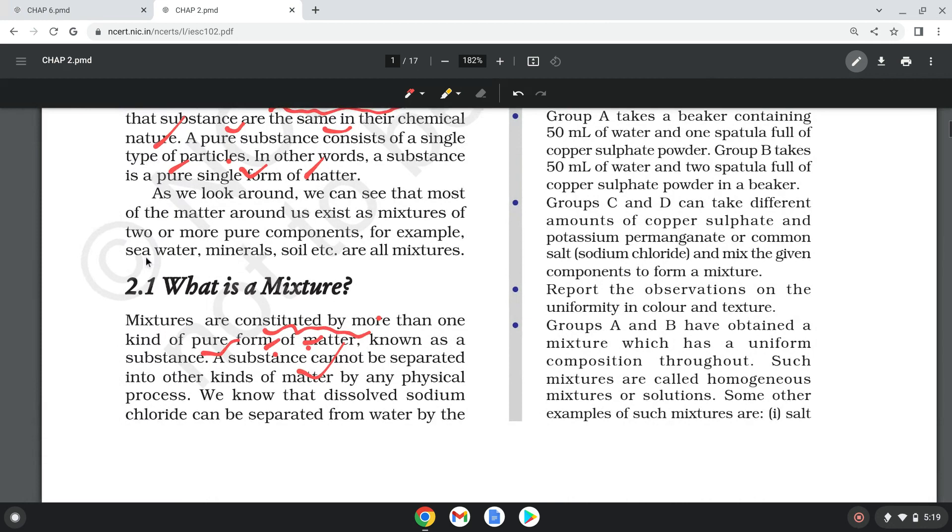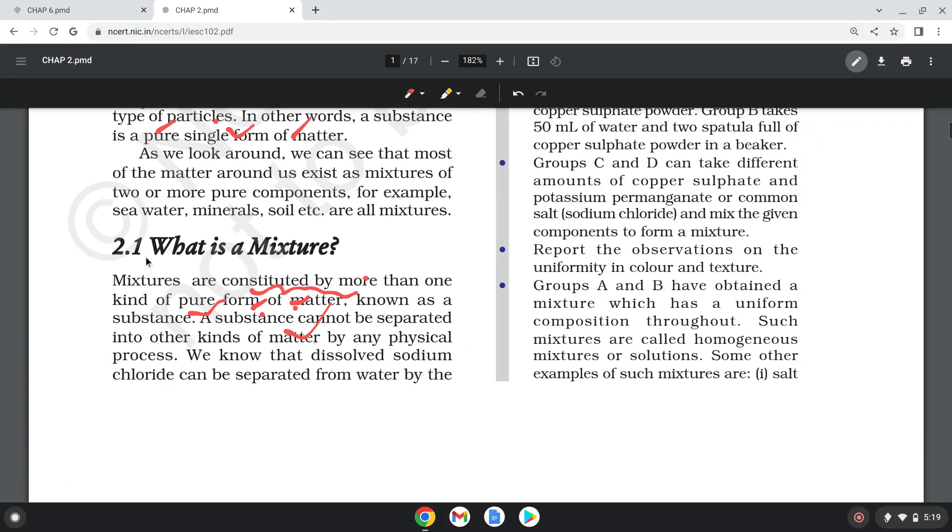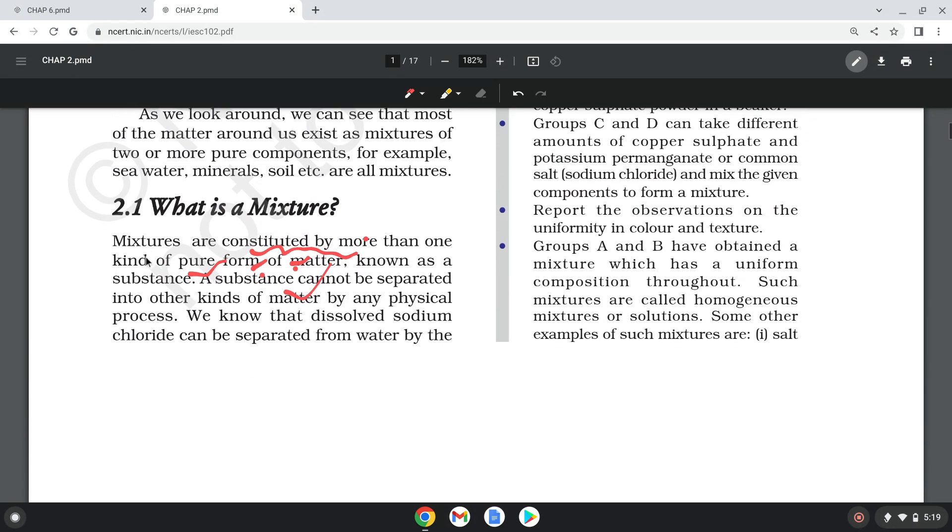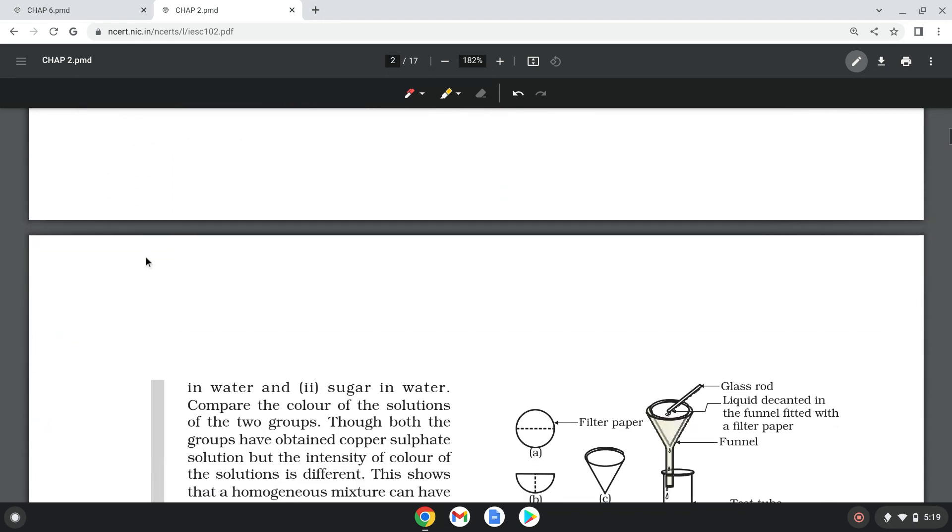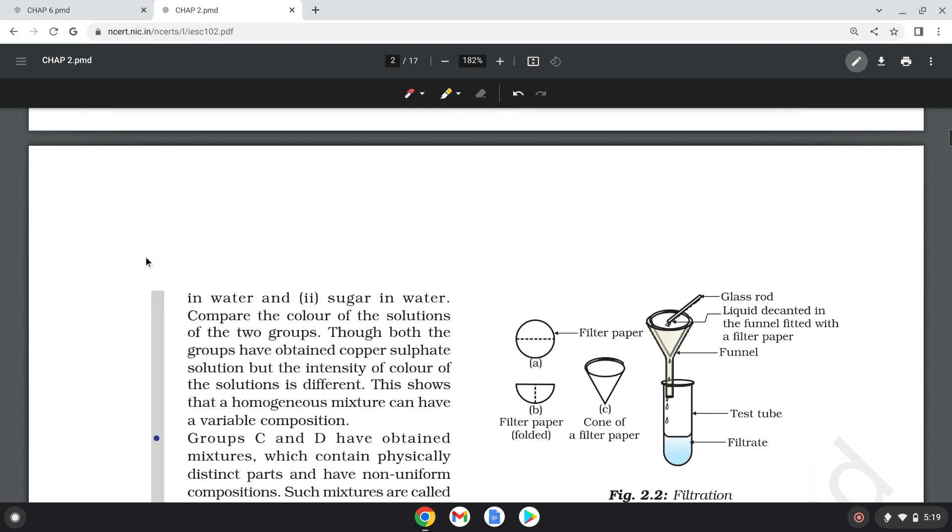Groups A and B have obtained a mixture with uniform composition - the composition is the same, that is known as homogeneous mixture. All groups have obtained copper sulfate solution, but the intensity of the color is different. This means homogeneous mixtures can be varied in composition.